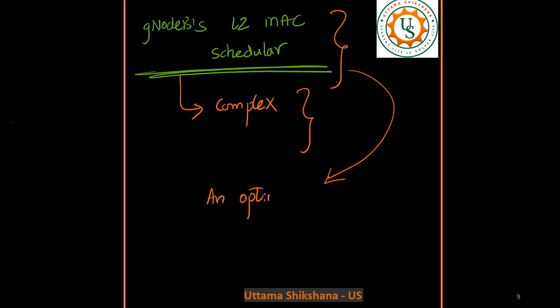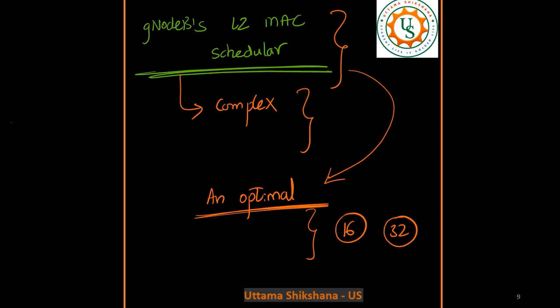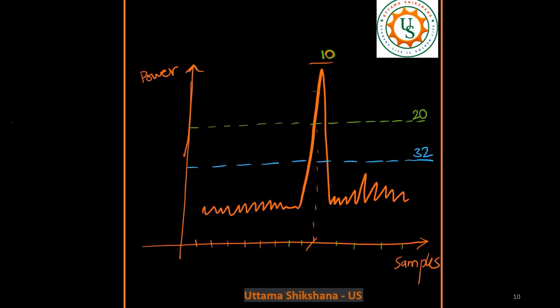Considering all these things, an optimal scheduler is required which can address an optimal number of UEs. What would that number be? It depends on how the scheduler is designed, what kind of platform you are using, and how much signal processing you can afford. Considering those aspects, 16 is a good amount — though some schedulers can go up to 32 or more.